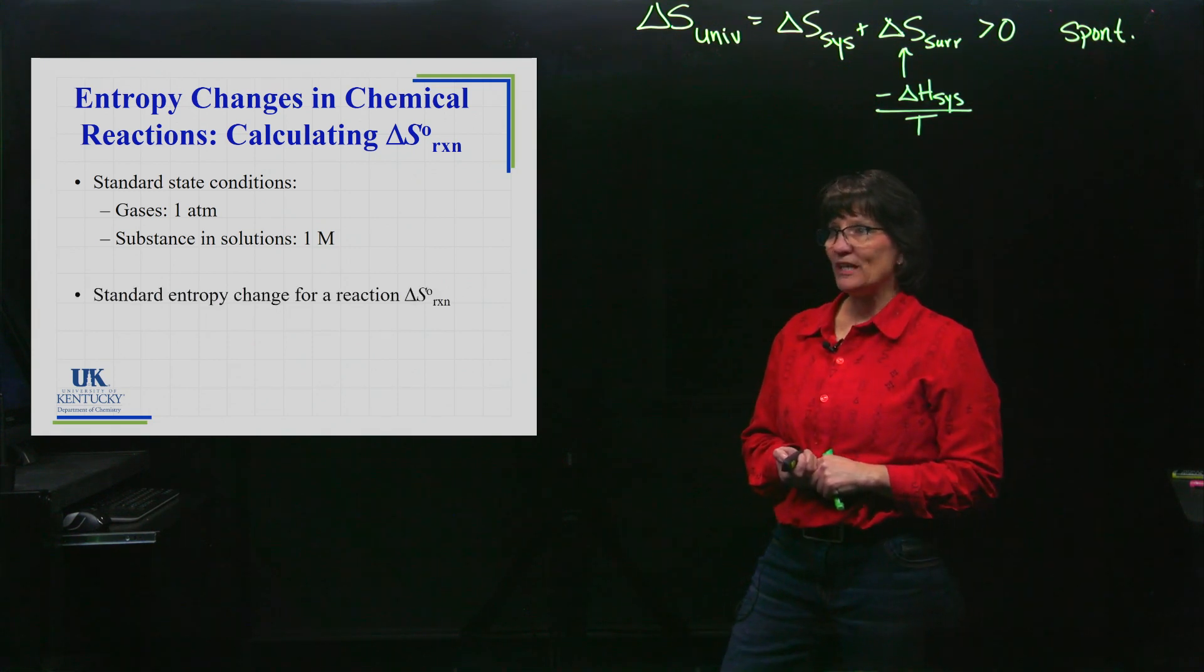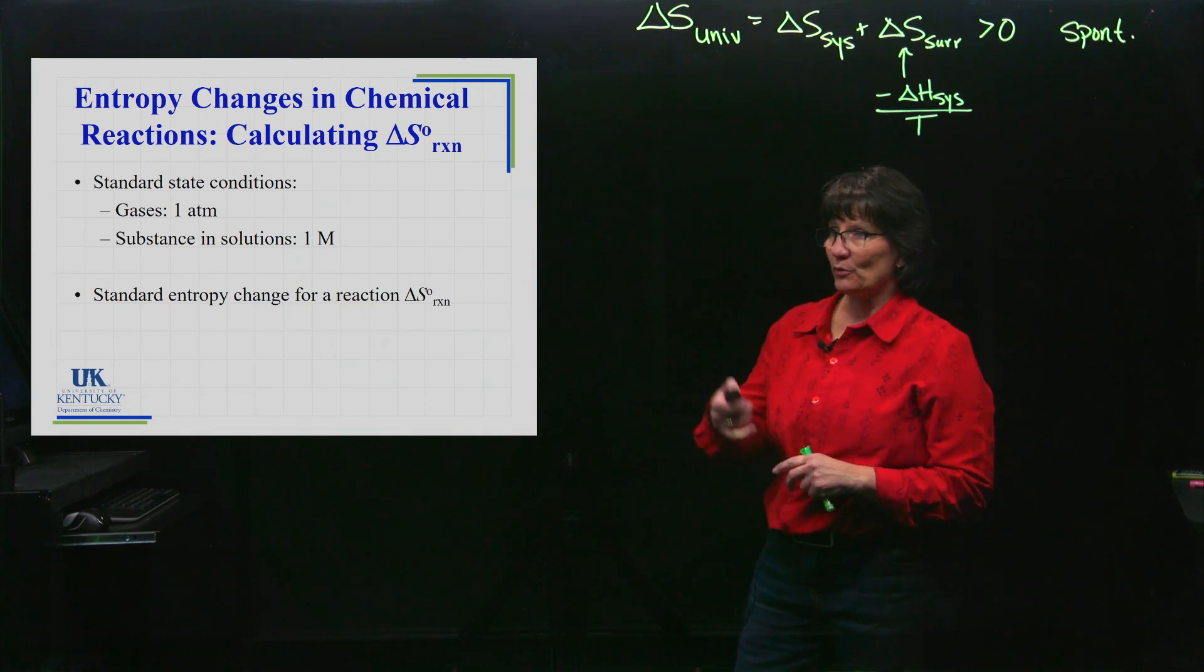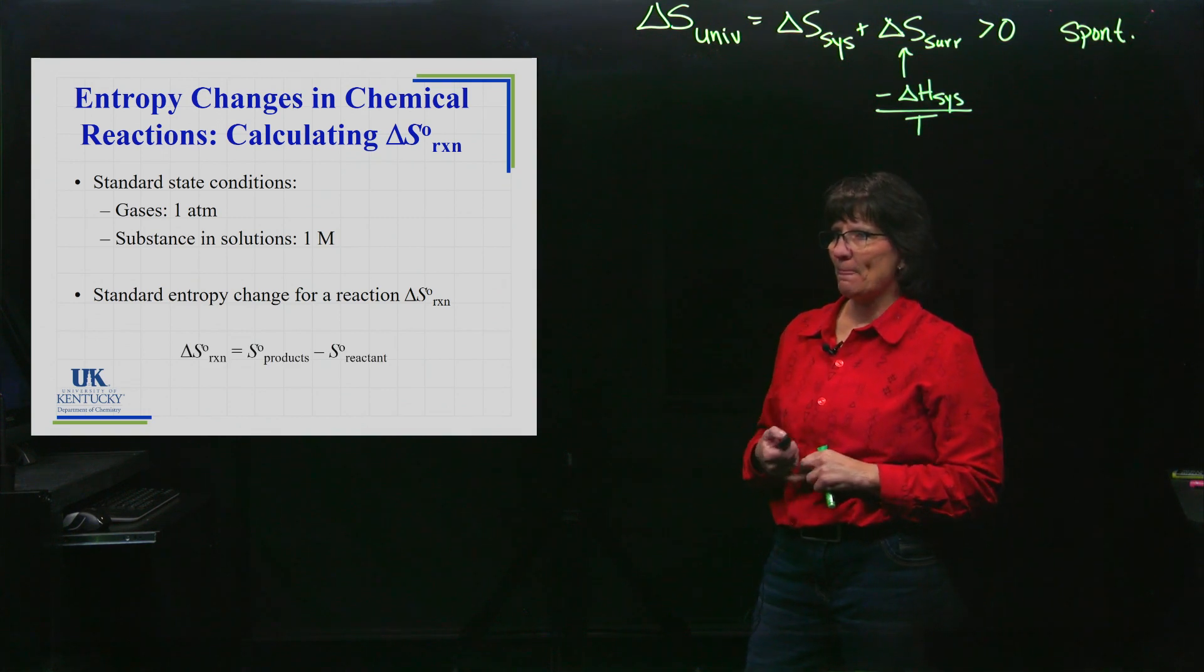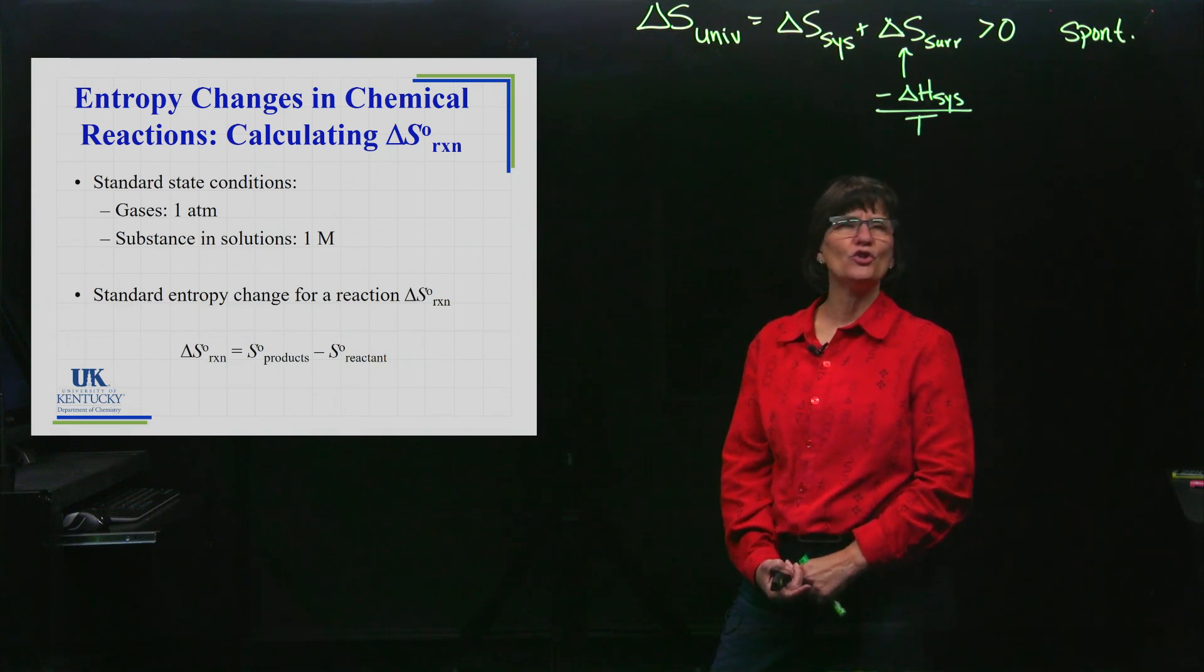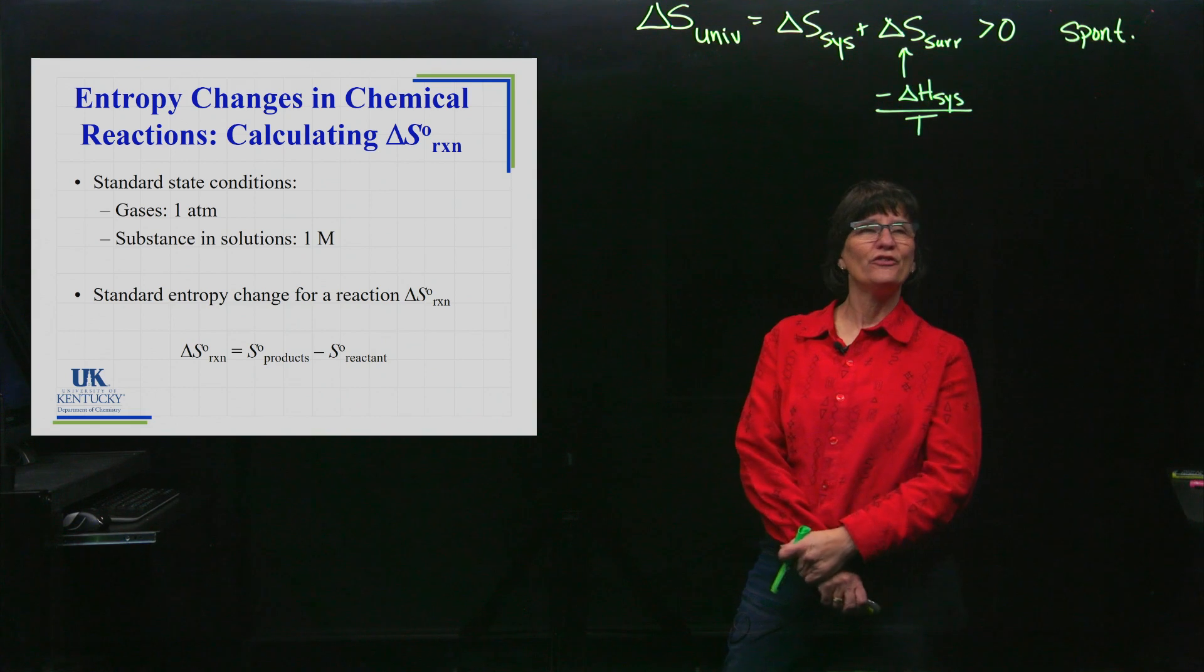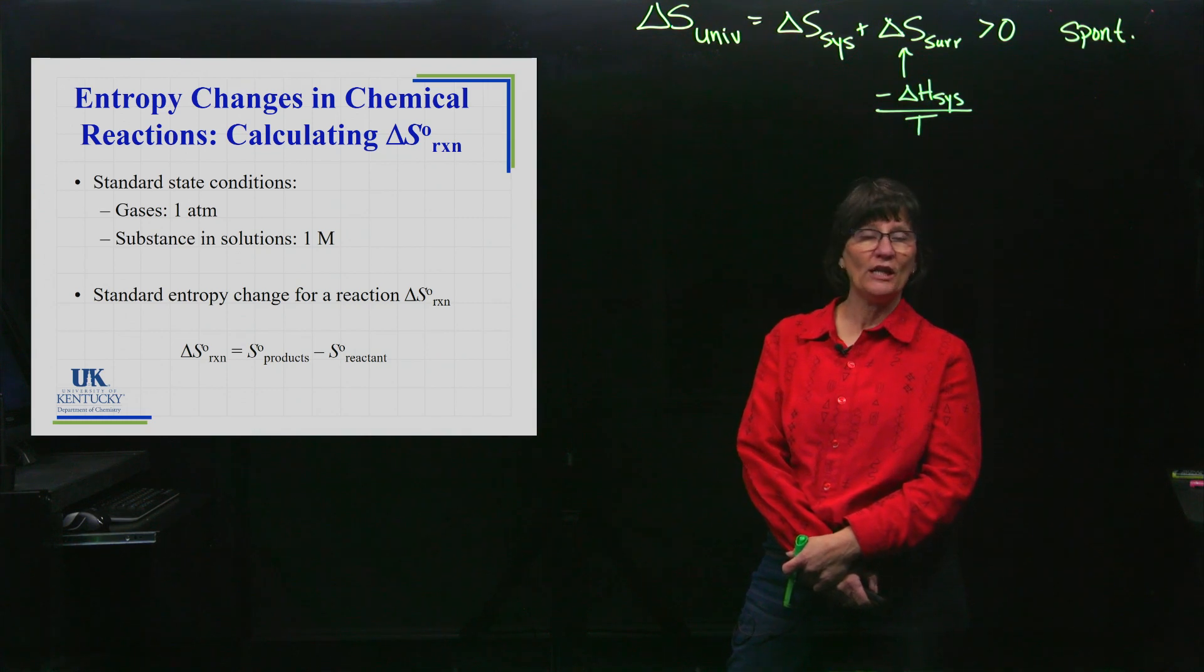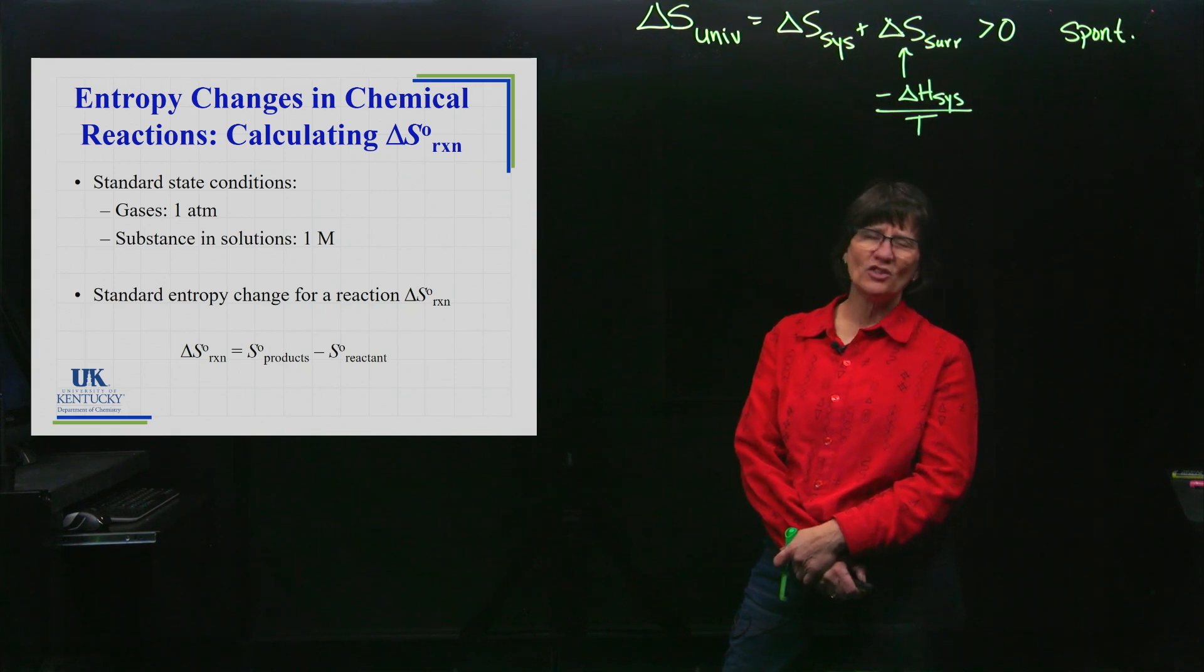There are tables full of these standard values. The standard entropy change for a reaction would be written with that little circle there. You can actually use the entropy because you can know the value for entropy of substances. You can determine the entropy of the products and the entropy of the reactants, subtract them, and get the change in entropy for the reaction.